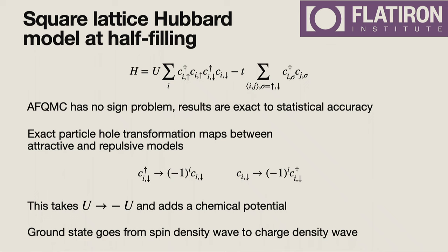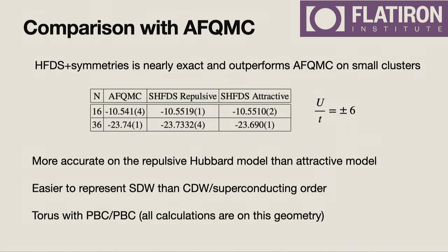Even though the attractive and repulsive models are the same at half filling in some sense, the ground state looks very different in Fock space. For the repulsive Hubbard model, electrons are localized with antiferromagnetic super-exchange, giving an antiferromagnetic Mott insulator. But when U goes from positive to negative, you get a charge density wave where electrons are paired at every other site. We tried both models with our neural network variational Monte Carlo approach and compared with AFQMC, finding nearly exact results on 16 sites and results very similar to AFQMC on 36 sites.